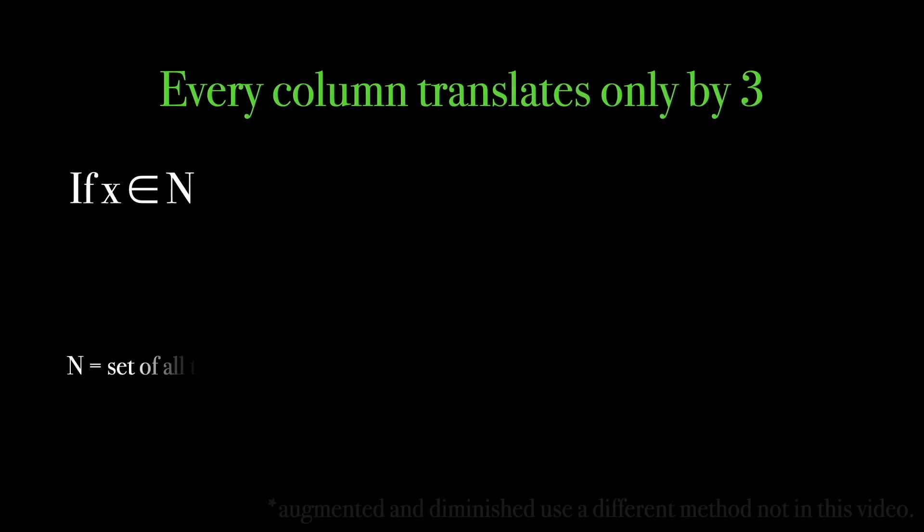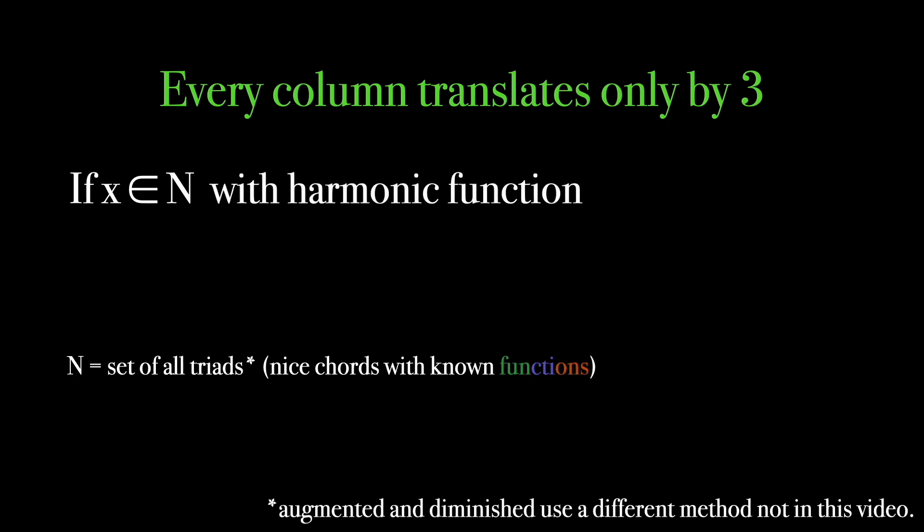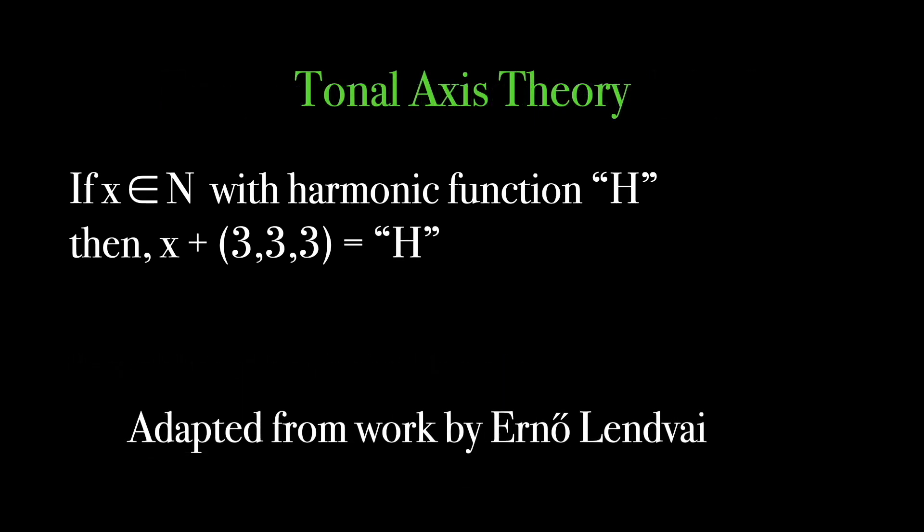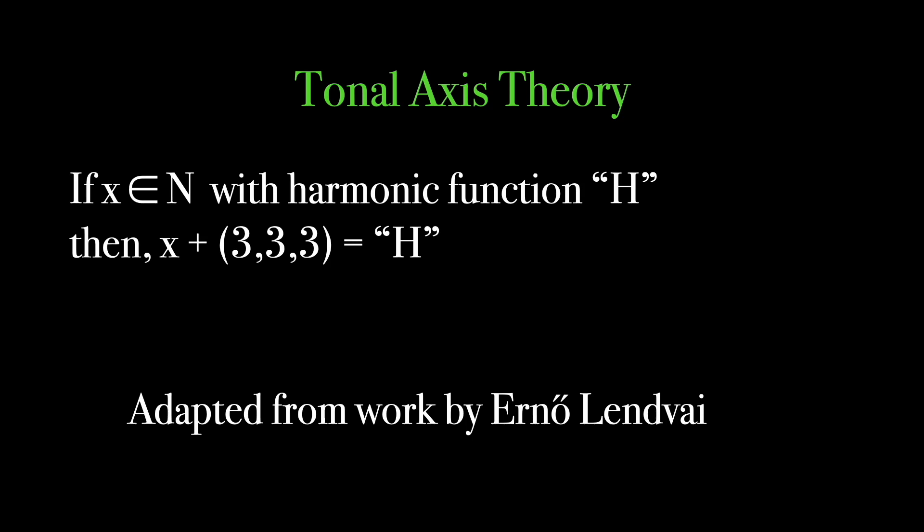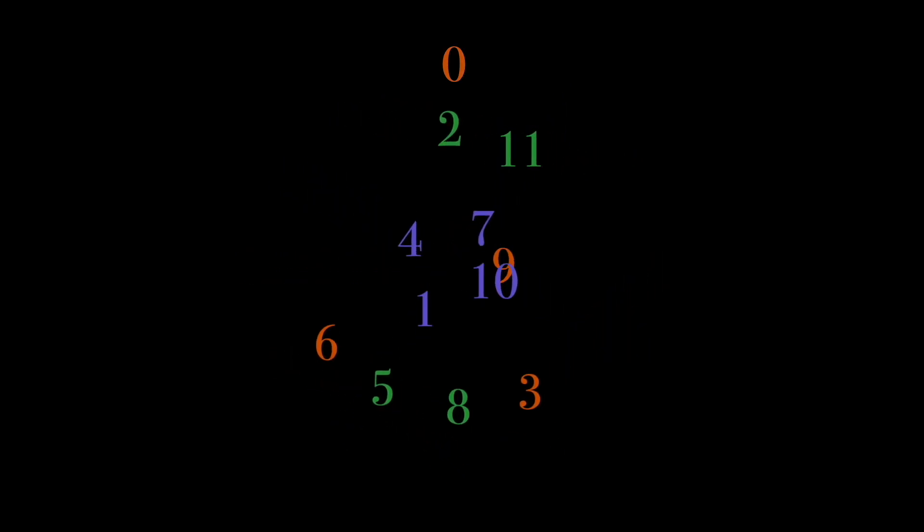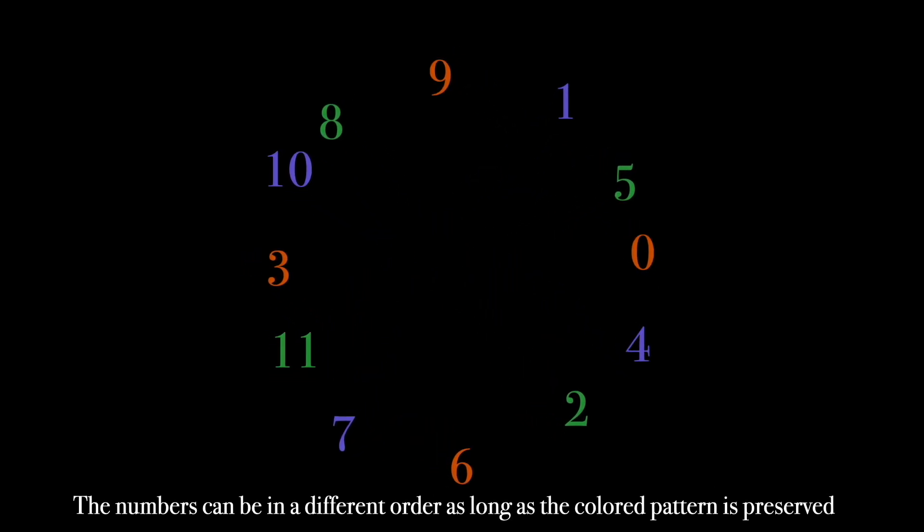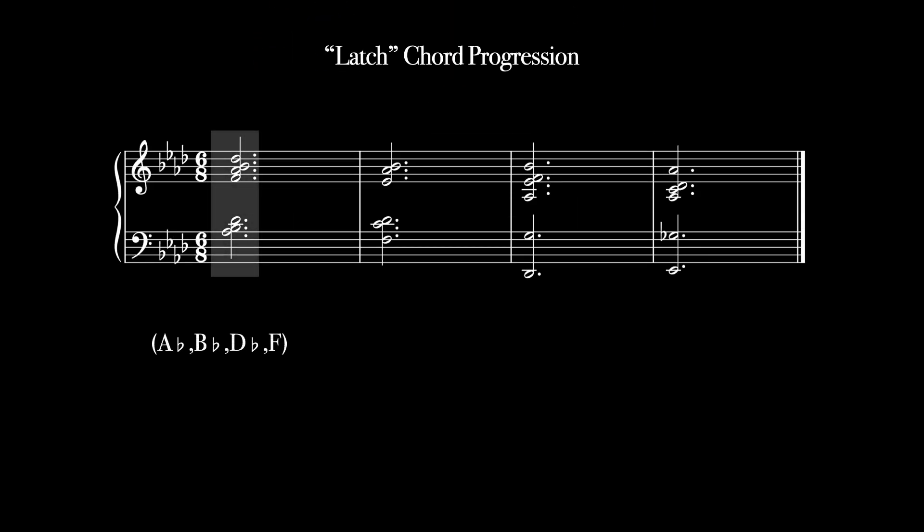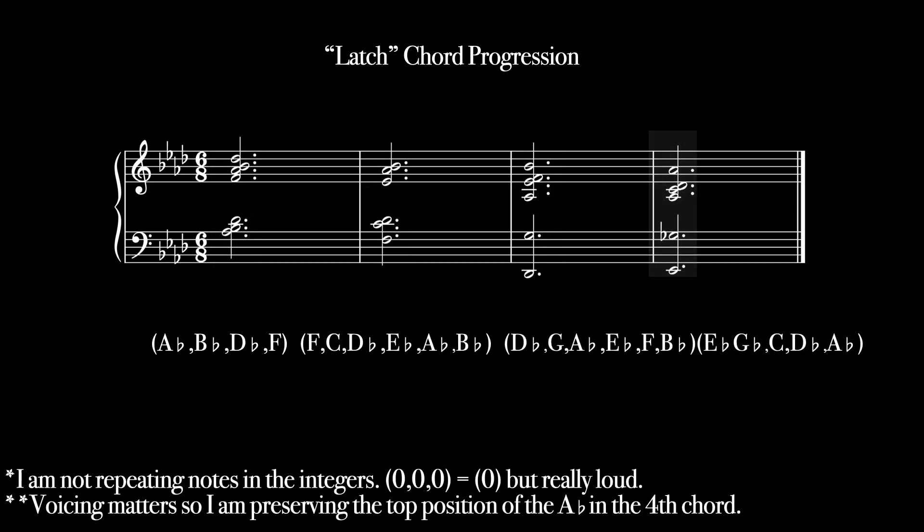We'll make an equation. Let X be a chord belonging to the set of all triads. It has harmonic function H, a placeholder for our three functions. When adding three to this chord, the harmonic function is still H. This add three symmetry is called tonal axis theory. It has a cool visual representation. First, arrange all of the numbers in a circle, and color them based on their functions. Next, shuffle the numbers, but retain the pattern. The only way to preserve the pattern is if all numbers move by multiples of three. Also, if you start with the original orientation, and move every other number by six, you get the circle of fi- I mean the magic music clock. Let's keep things professional. Let's turn our latch chords into numbers and see why tonal axis theory is insufficient for analysis.